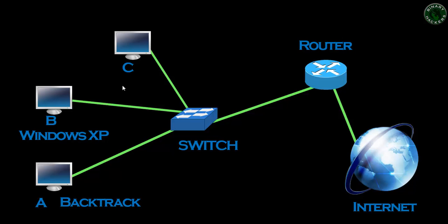ARP operates at the second layer of the OSI model — the data link layer — and works on MAC addresses. When the Backtrack machine sends an arping packet, it goes to the switch. Before arping, we need to specify the IP address of the particular host we want to scan. The switch sends the packet to that host. If we use the Windows XP machine's IP address, the switch sends the packet to the Windows XP machine, and it replies back with its MAC address.